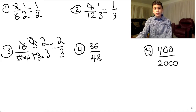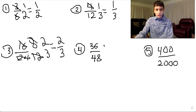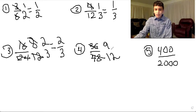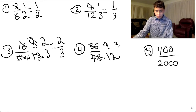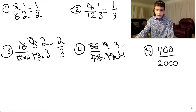With number four, it's hard to find the largest number that can go into both the numerator and denominator. But I can see that four goes into both of them. So 36 divided by four gives you nine, and four goes into 48 twelve times. Now we still have to divide by three. So nine divided by three equals three, and 12 divided by three equals four. That's our final answer: three over four.